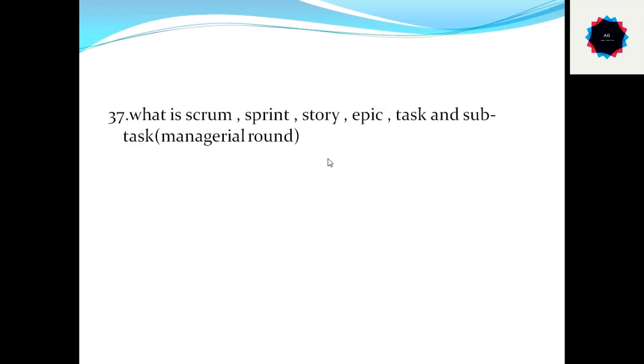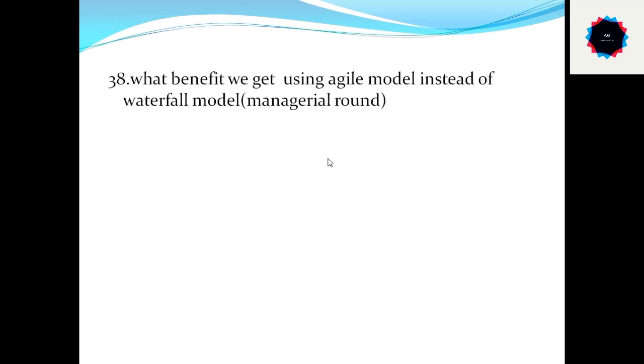Question number 37: what is Scrum, Sprint, Story, Epic, Task and Subtask? So this is also the manager round question. Question number 38: what benefits we get using Agile model instead of a Waterfall model?